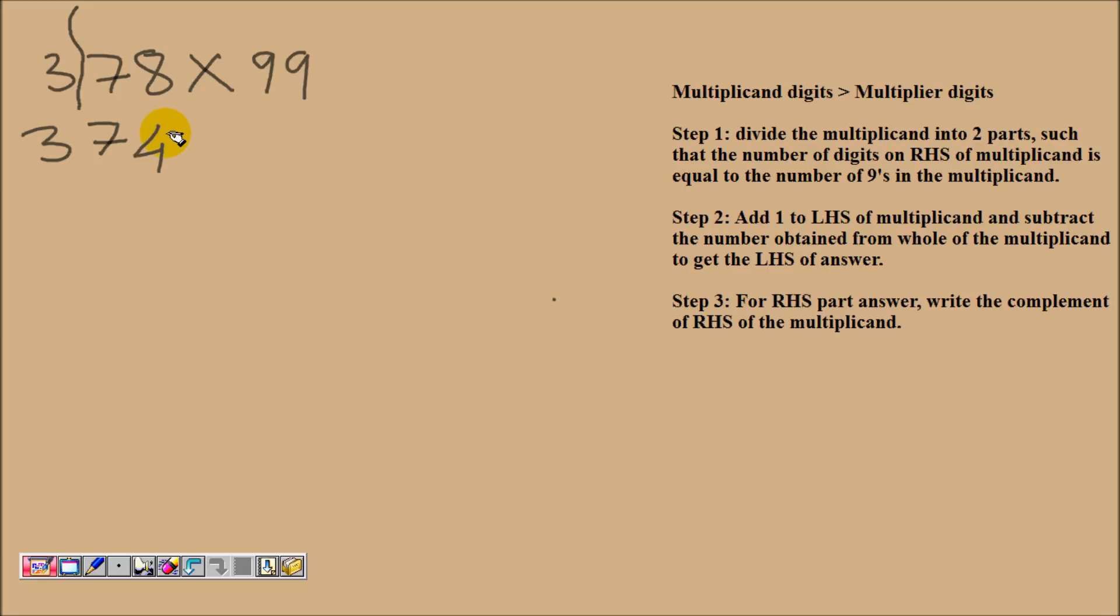Now in the third step, to obtain the RHS part of the answer, we will find the complement of 78. Complement just means subtracting this number from the nearest base. Since 78 is a 2-digit number, we will subtract this 78 from the nearest base 100. So on subtracting 78 from 100, we will get 22. So this will be our answer.